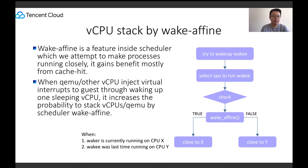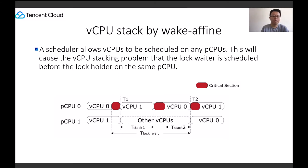The next topic is vCPU stall by wake-affine. Wake-affine is a feature inside the scheduler which attempts to make processes run closely together, gaining benefit mostly from cache heat. When QEMU or other vCPU threads inject virtual interrupts to the guest by waking up a sleeping vCPU, it increases the probability of stacking vCPUs or QEMU threads together via the scheduler's wake-affine feature. The scheduler then allows the vCPU to be scheduled on any physical CPU, causing the vCPU stall problem where the lock waiter is scheduled before the lock holder on the same physical CPU.